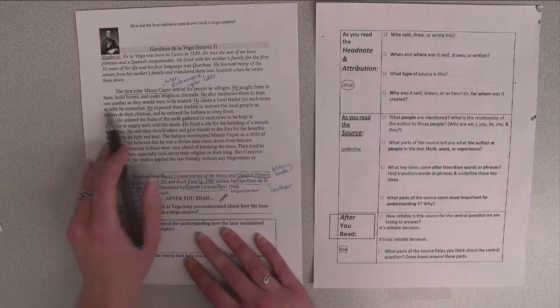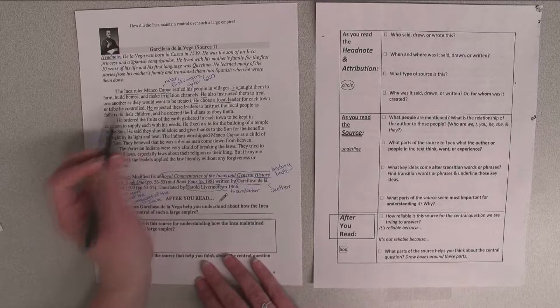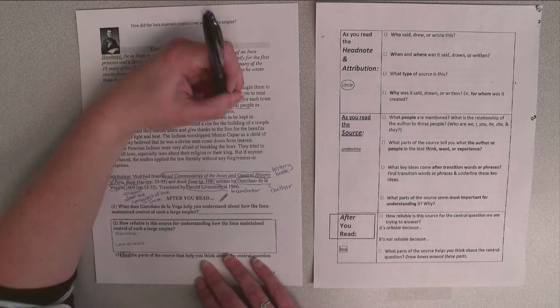He also instructed them to treat one another as they would want to be treated. He chose a local leader for each town or tribe he controlled. So I'm going to underline these local leaders as people that he's talking about. He expected these leaders to instruct the local people as fathers do their children, and he ordered the Indians to obey them.